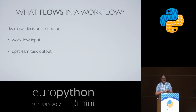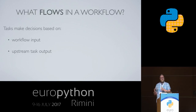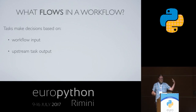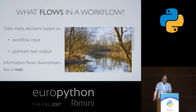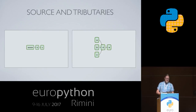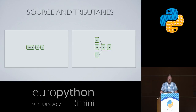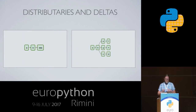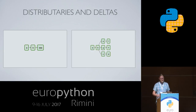Every task in our workflow makes decisions, and those decisions are based on the input to the workflow run that was started and also the output of upstream tasks. All information flows from upstream to downstream — it's kind of like a river. Like a river, a workflow starts somewhere, so it has a source. It may have many tributaries which join together to form this river. It also ends somewhere, like a river flowing down into the sea, or it can form many final branches like a river delta.